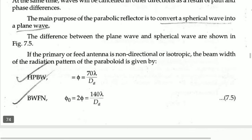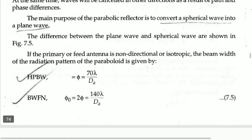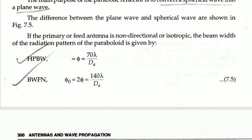There are two important beam width equations. The half power beam width is denoted by angle φ = 70λ / D_A, where λ is the wavelength and D_A is the mouth diameter or length of the directrix. The first null beam width is 2φ = 140λ / D_A. These can be calculated using the radiation pattern of the parabolic reflector. Please remember these equations.